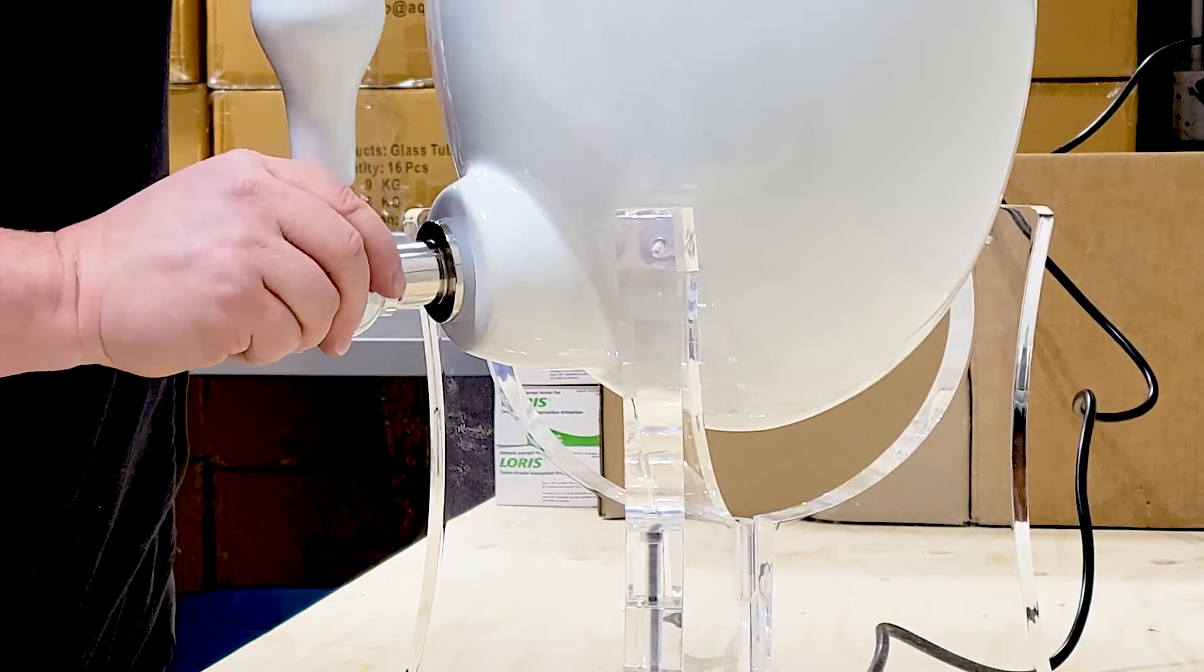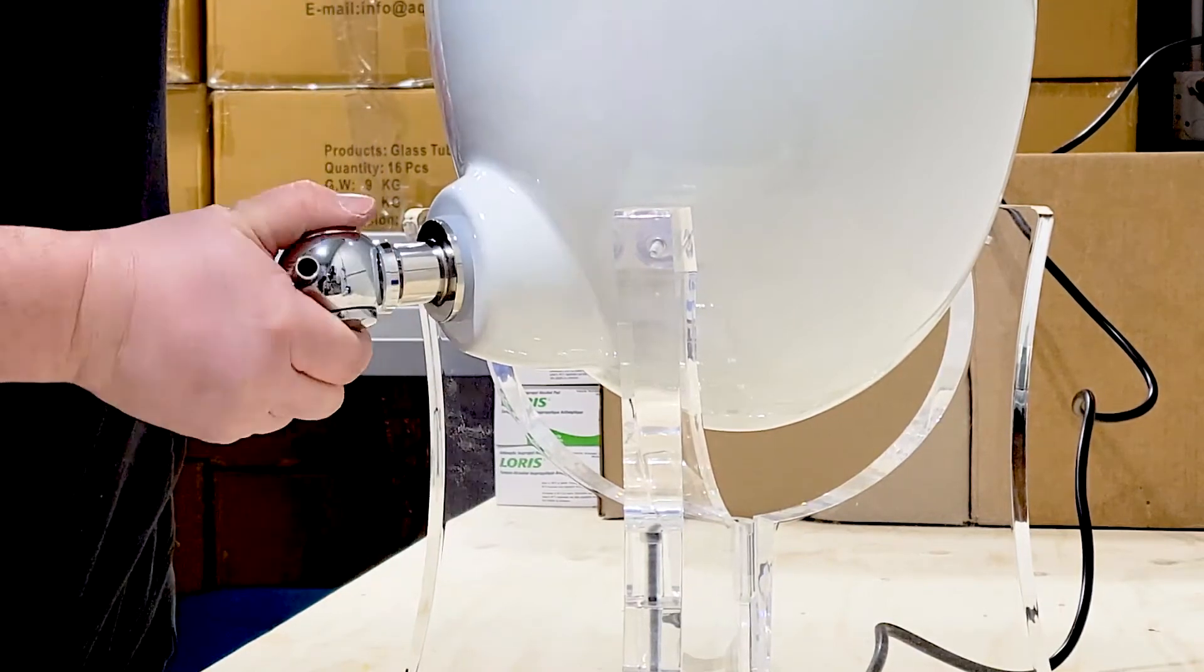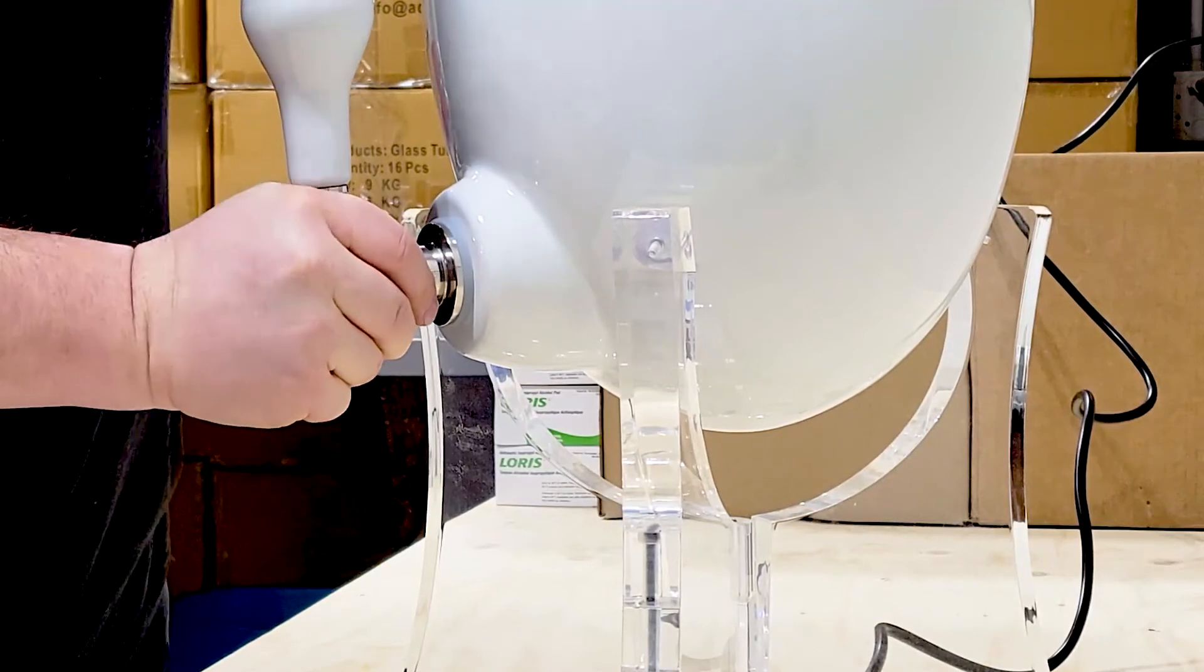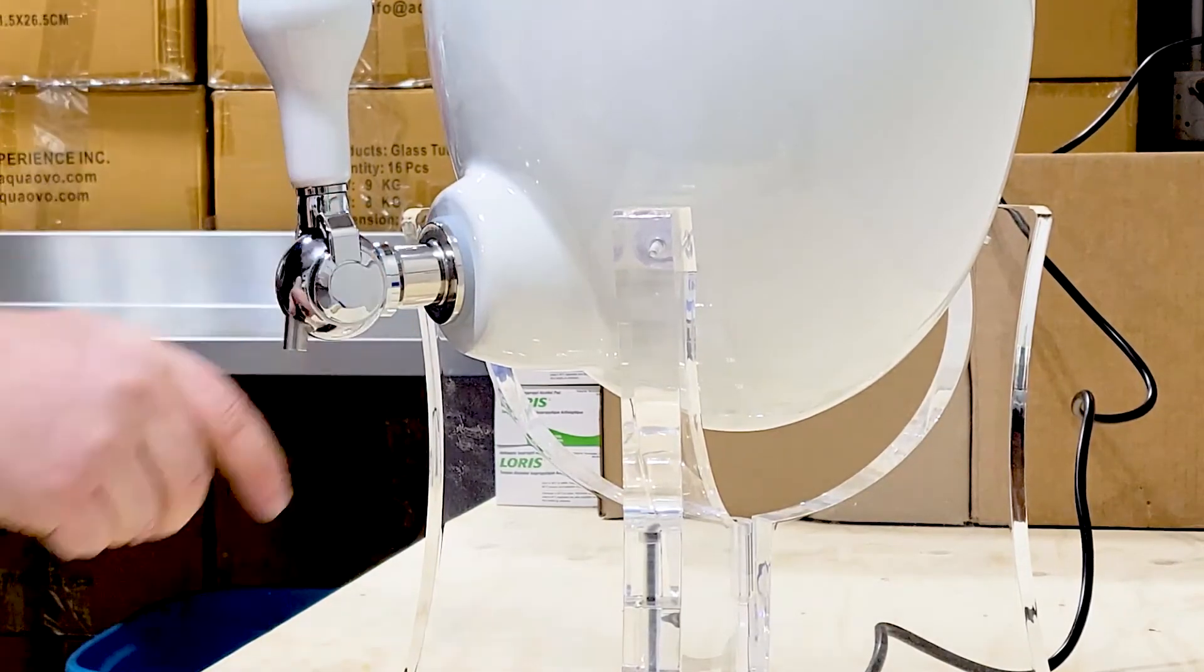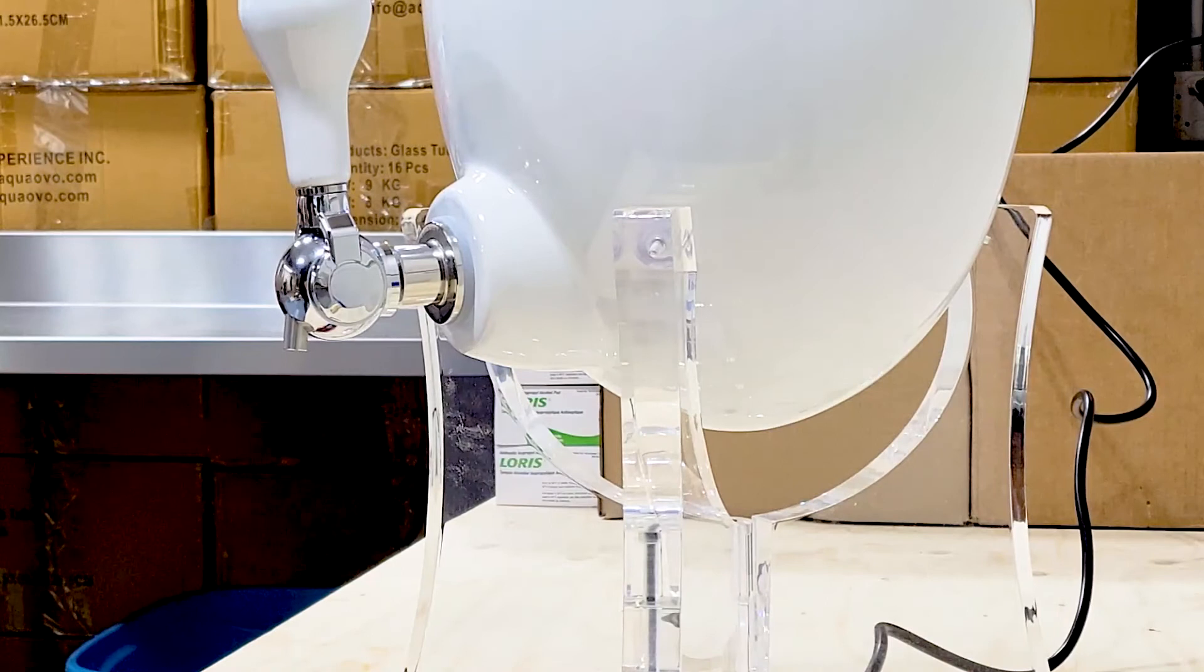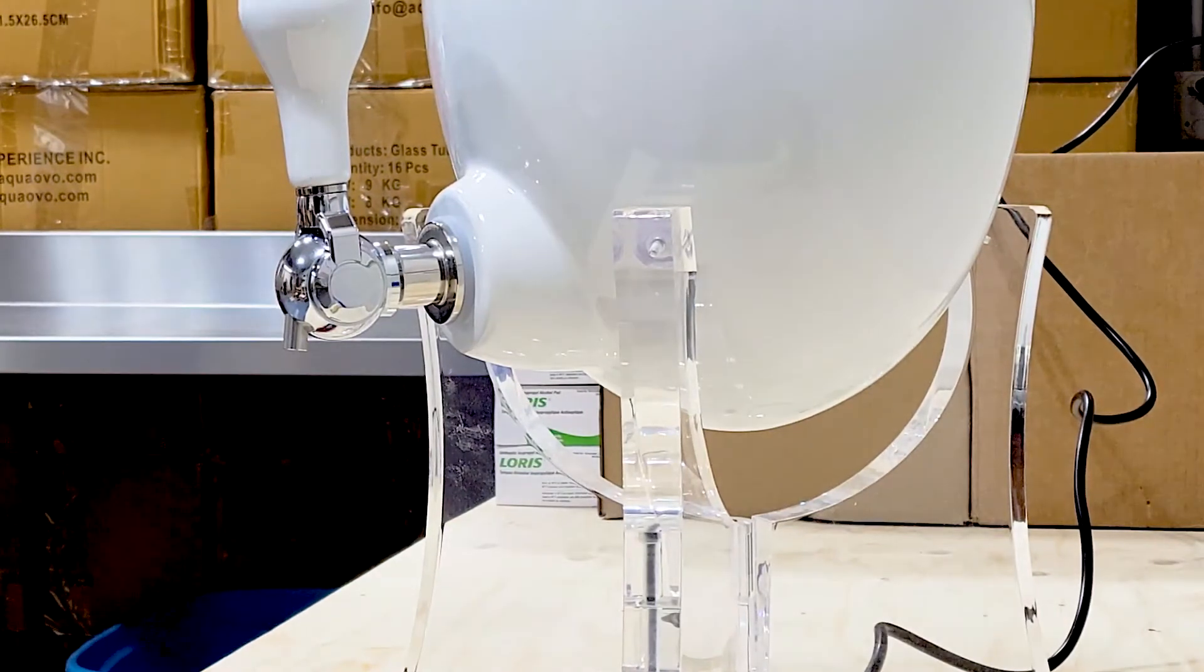With one hand, firmly hold the nut inside the tank, and with the other hand turn the tap clockwise. Make a complete turn using the tap body as a lever.